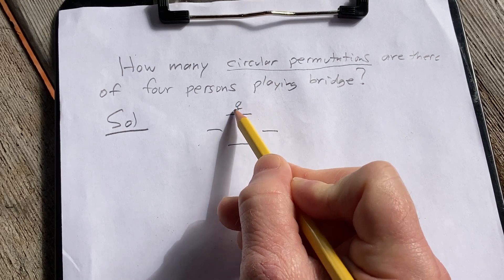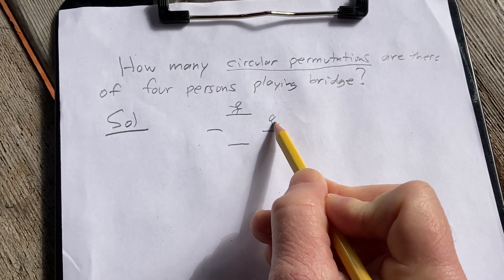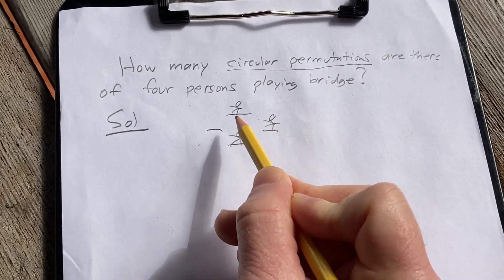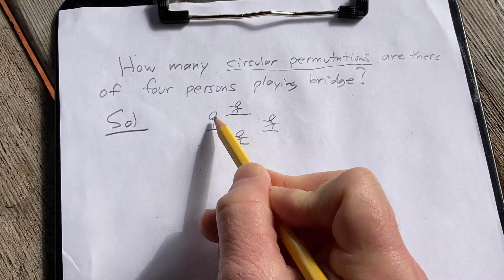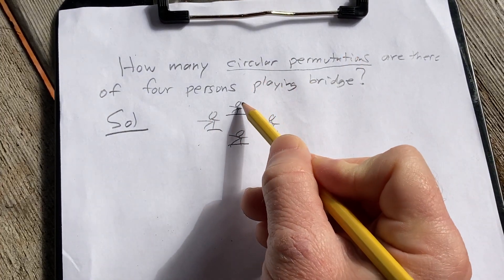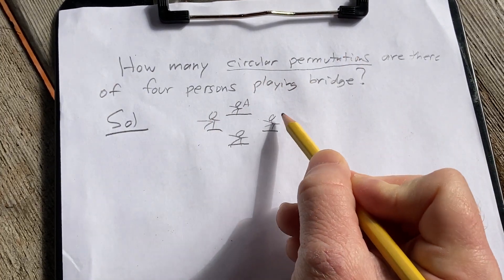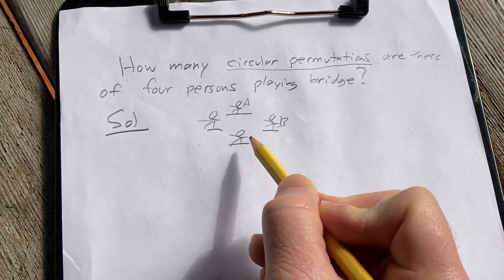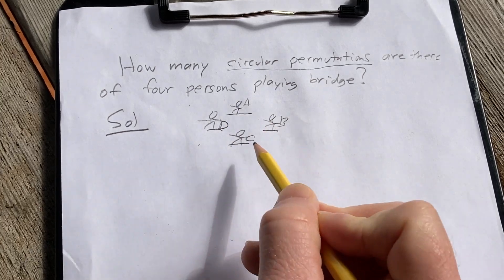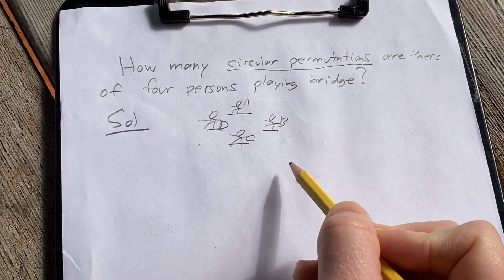and you put a person here, here, here, and here, and let's say you call this person A, B, C, D — that's a circular permutation.